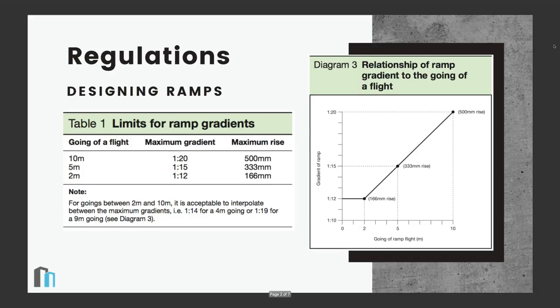So the first thing we look at when we're working out ramps for our designs is the regulations. We look at the approved document Part K and Part M of the building regulations where they specify the limits for ramp gradients for access to a building. Part K looks at the ramps that form part of the building while Part M looks at ramps that form an accessible entrance or an access route to a building.